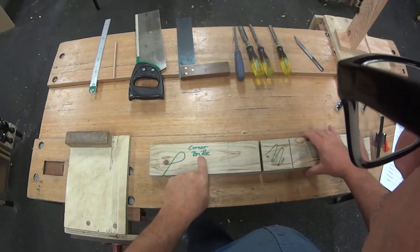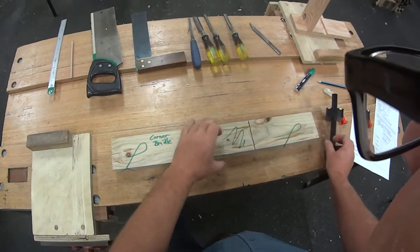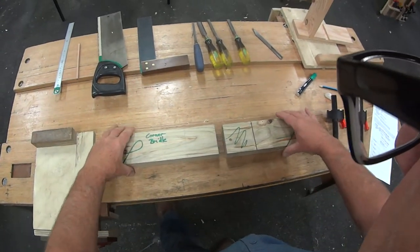Okay, in this video we're going to look at the corner bridle joint. One piece of timber cut into two.